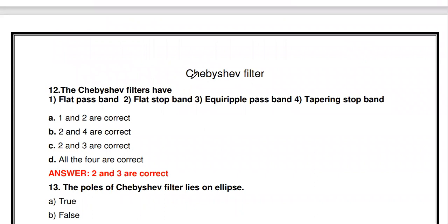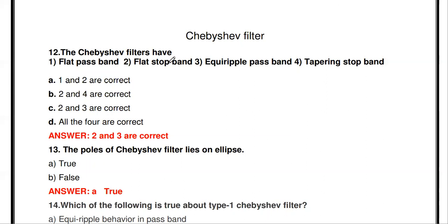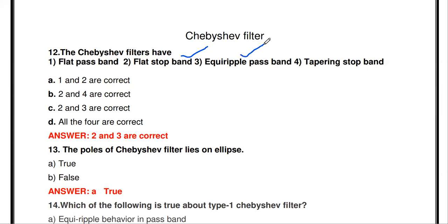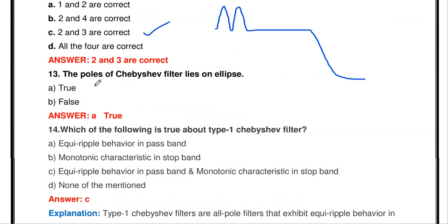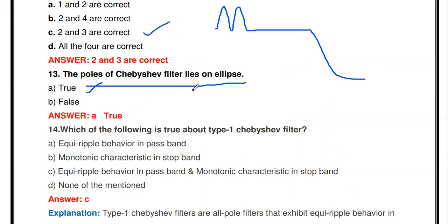Now the Chebyshev filter questions. The Chebyshev filter has: flat stopband and equiripple passband. The passband has equiripple characteristics, and the stopband is flat. Options 2 and 3 are correct. The poles of the Chebyshev filter lie on an ellipse — unlike the Butterworth filter whose poles lie on a circle, the Chebyshev filter poles lie in an elliptical manner.